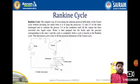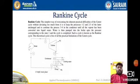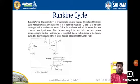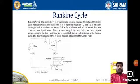The Rankine cycle starts from state 1 to 2 — state 1 is before the boiler and state 2 is after the boiler. Heat is added in the boiler, converting water into steam. That steam enters the turbine, which spins and produces work output, denoted as W_T.